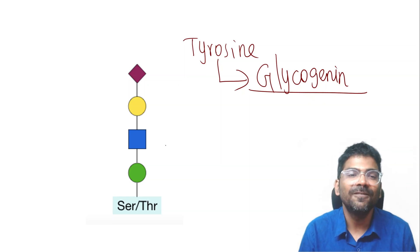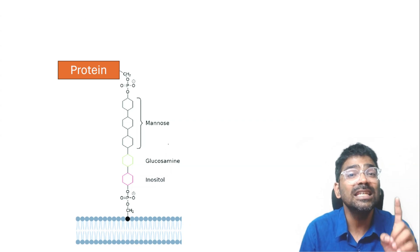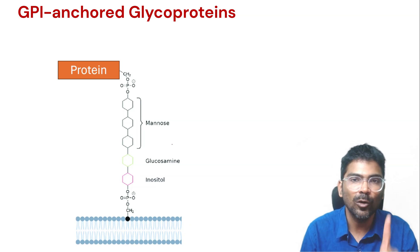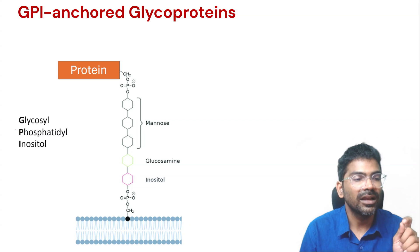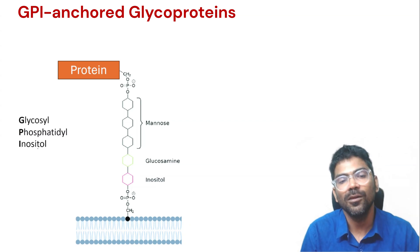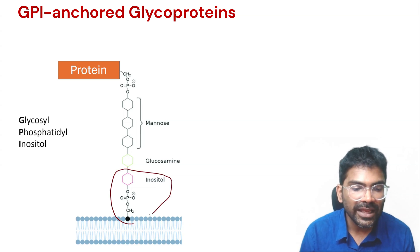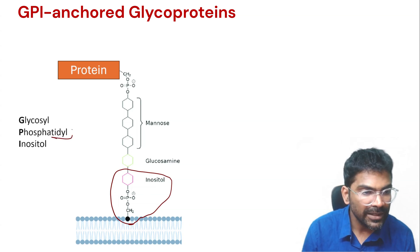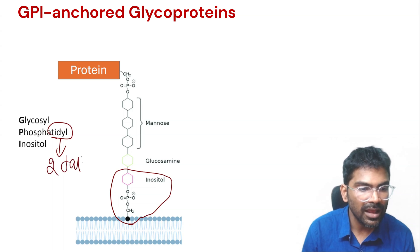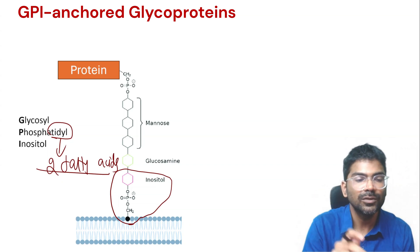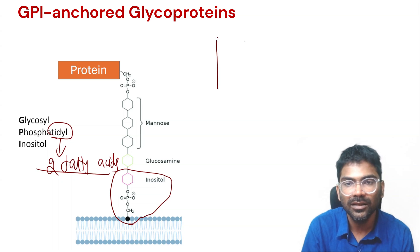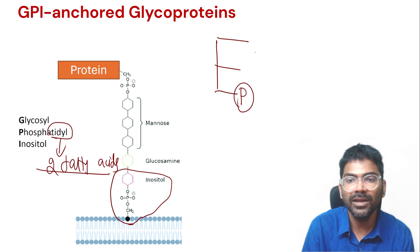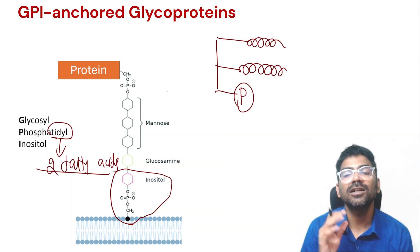The third and final type is GPI-anchored glycoprotein. GPI stands for glycosyl phosphatidyl inositol. The phosphatidyl inositol portion is a phospholipid. Phosphatidyl means two fatty acids are attached to glycerol with a phosphate group — that is phosphatidic acid. To phosphatidic acid, a carbohydrate (glycosyl) is attached.